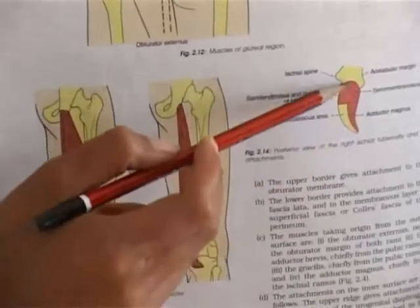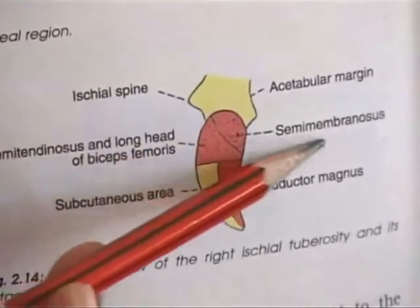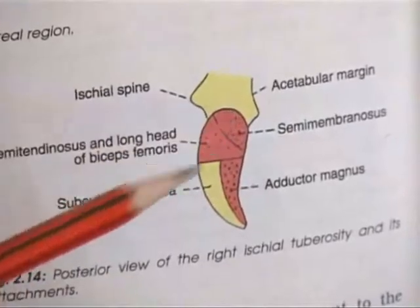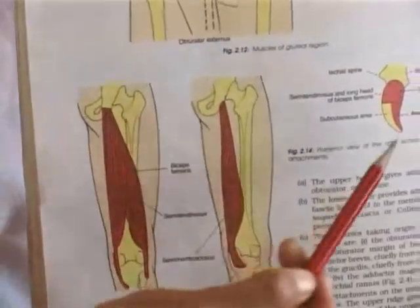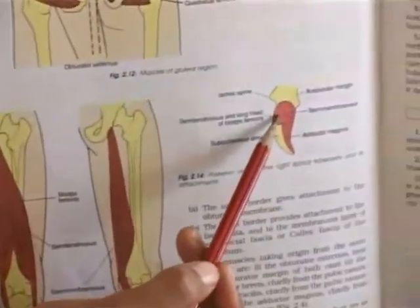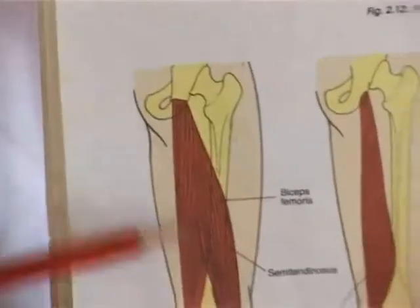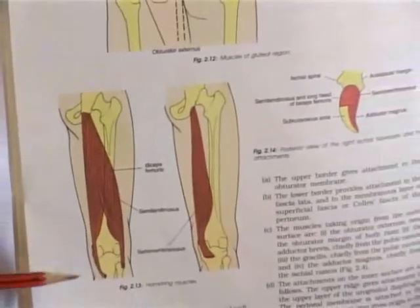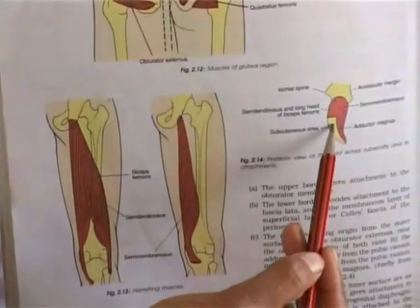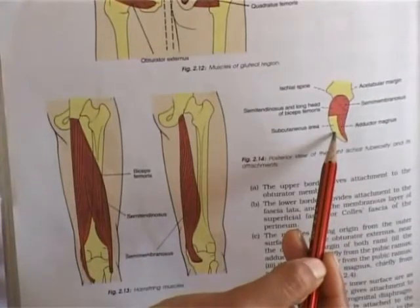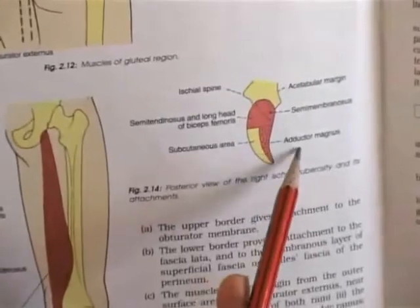The ischial tuberosity: the upper area — the superolateral part gives origin to the semimembranosus muscle. The inferomedial part gives origin to semitendinosus and the long head of biceps femoris. The lower area — the medial part has a bursa on which one comfortably sits, and the lateral part gives origin to the ischial head of the adductor magnus muscle.